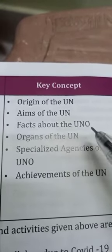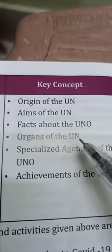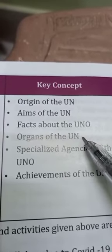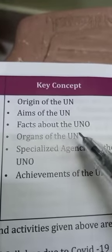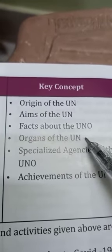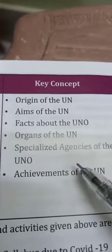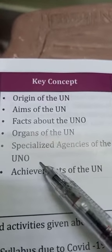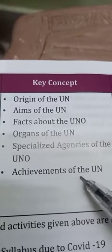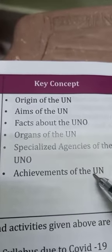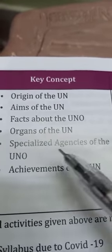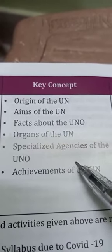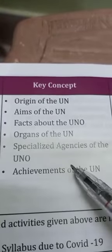Then, facts about the United Nation, organs of UN — we have five to six organs that need to be learned. And then specialized agencies of the UNO, and achievements of UNO. So these all key concepts are there in the chapter, and I have already explained regarding all these key concepts.